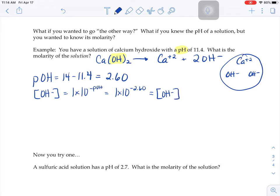1 times 10 to the negative 2.60 is what we want, it's just not a properly written number. So I have to go to my calculator and have my calculator convert that for me into a proper number. And your calculator should tell you something like this. Well, that's the molarity of the hydroxide ion, but it wanted the molarity of the whole solution, the whole thing, calcium hydroxide, not just hydroxide.